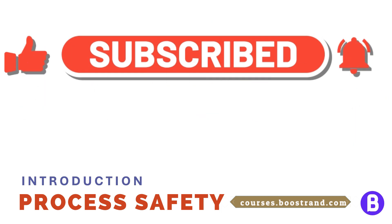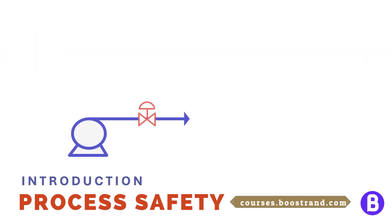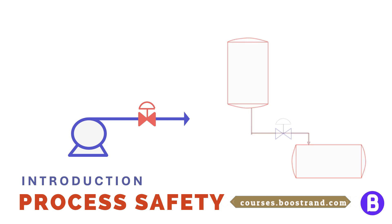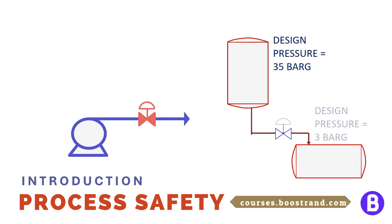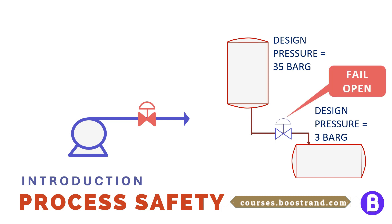For example, what if the valve at the pump discharge failed in the closed position — whether due to a false reading or mechanical failure? The upstream pressure shall increase. Is the upstream system ready for that pressure? Or what if the valve controlling the flow from a high-pressure system to a low-pressure system failed in the open position, meaning the valve is at 100% opening? How shall this excessive flow affect the downstream system?